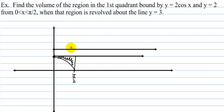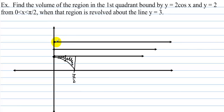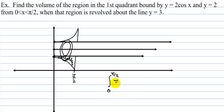We rotate this around the line y equals 3. If we pick an arbitrary x value from 0 to pi over 2, the reflection is up above y equals 3. Taking the inside and rotating it gives the inside circle, and taking the outer point and rotating it gives the outside circle — so we have a washer effect again. We have the integral from 0 to pi over 2 of pi times big R squared minus pi times little r squared.